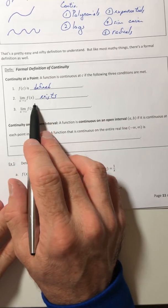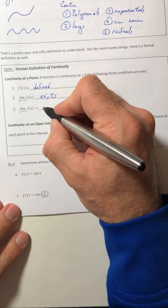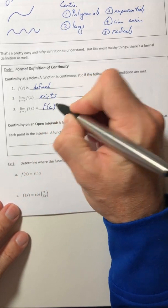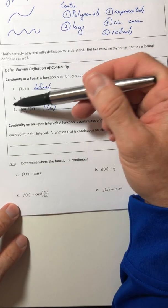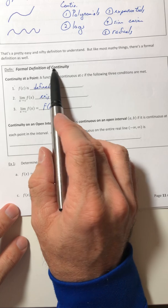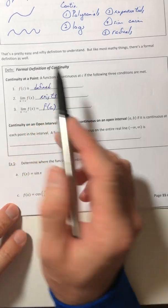And then the third one, not only does the limit have to exist, it has to equal f of C. So if these three conditions are met, then the function is continuous at that point.